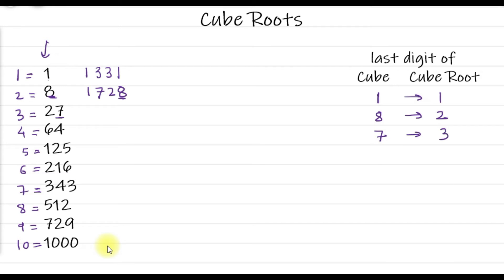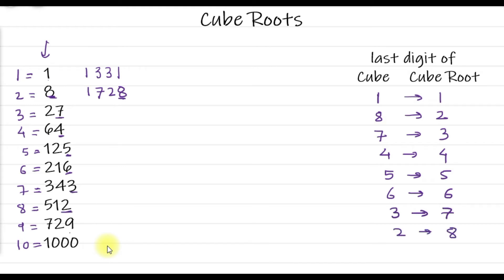When the cube ends with 4, the cube root must end with 4. For 5 it's simple — when the cube ends with 5 the cube root ends with 5. It's also simple for 6 — when the cube ends with 6 the cube root also ends with 6. From 7³ = 343: when the cube ends with 3, the cube root ends with 7. When the cube ends with 2, the cube root ends with 8. And when the cube ends with 9, the cube root also ends with 9.